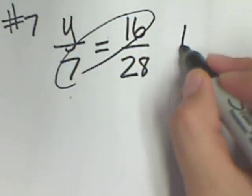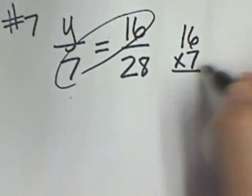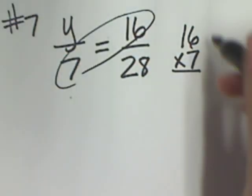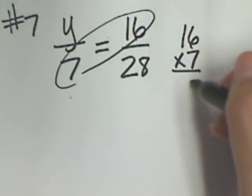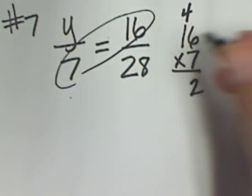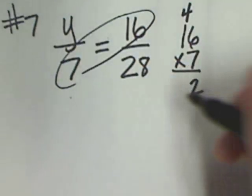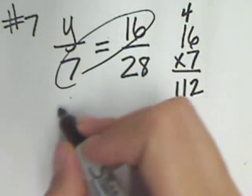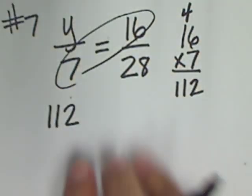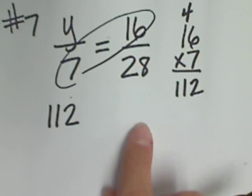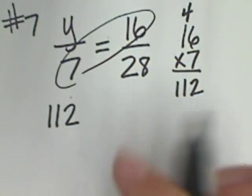So, let's do 7 times 16. Pull to the side to work that out. 7 times 6? 42. 7 times 1 plus 4? Okay, 112, which means 112 can be on either side, it doesn't matter. But I need to bring my equal sign down.